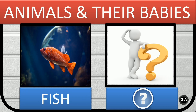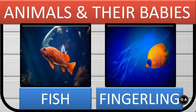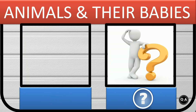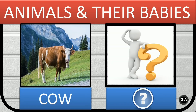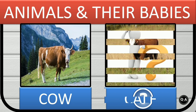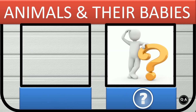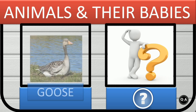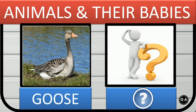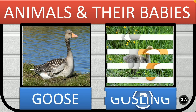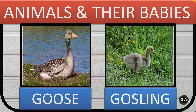Fish's baby is fingerling. Cow's baby is calf. Goose's baby is gosling.